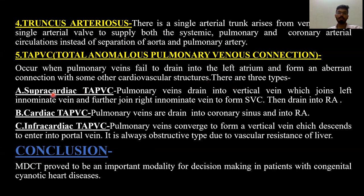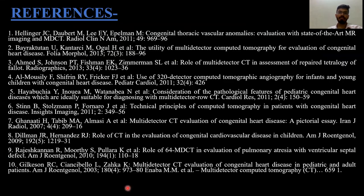There are three types of TAPVC. Supracardiac TAPVC: pulmonary veins drain into a vertical vein which joins the left innominate vein, then the right innominate vein to form the SVC, draining into the right atrium. Cardiac TAPVC: pulmonary veins drain into the coronary sinus and into the right atrium. Infracardiac TAPVC: pulmonary veins converge to form a vertical vein descending into the portal vein; it is always obstructive due to vascular resistance of the liver. In conclusion, MDCT proved to be an important modality for decision-making in patients with congenital cyanotic heart disease.